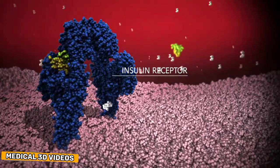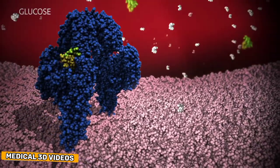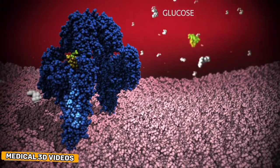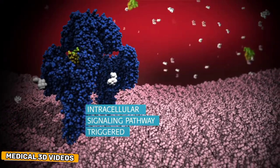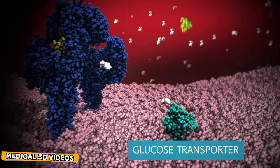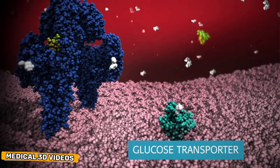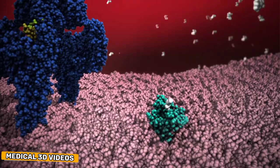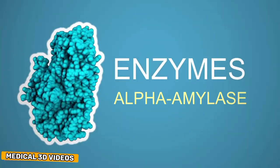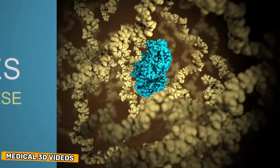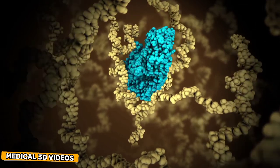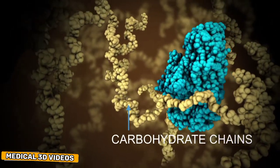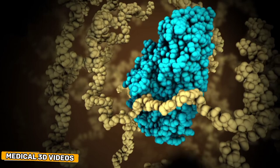The hormone insulin is a small stable protein that can easily maintain its shape while traveling through the blood to regulate blood glucose levels. Alpha amylase is an enzyme that begins digestion of starches in our saliva.